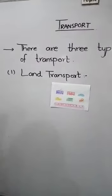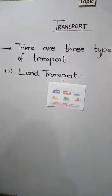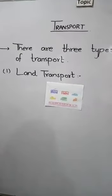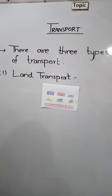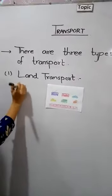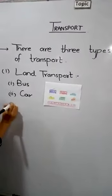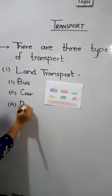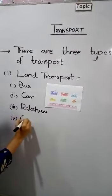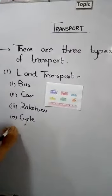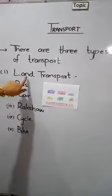All this land transport runs on petrol, diesel or CNG. Now, can you tell me the names of some of the vehicles we use in land transport? Bus, car, raksha, cycle, bike — all these are land transport.